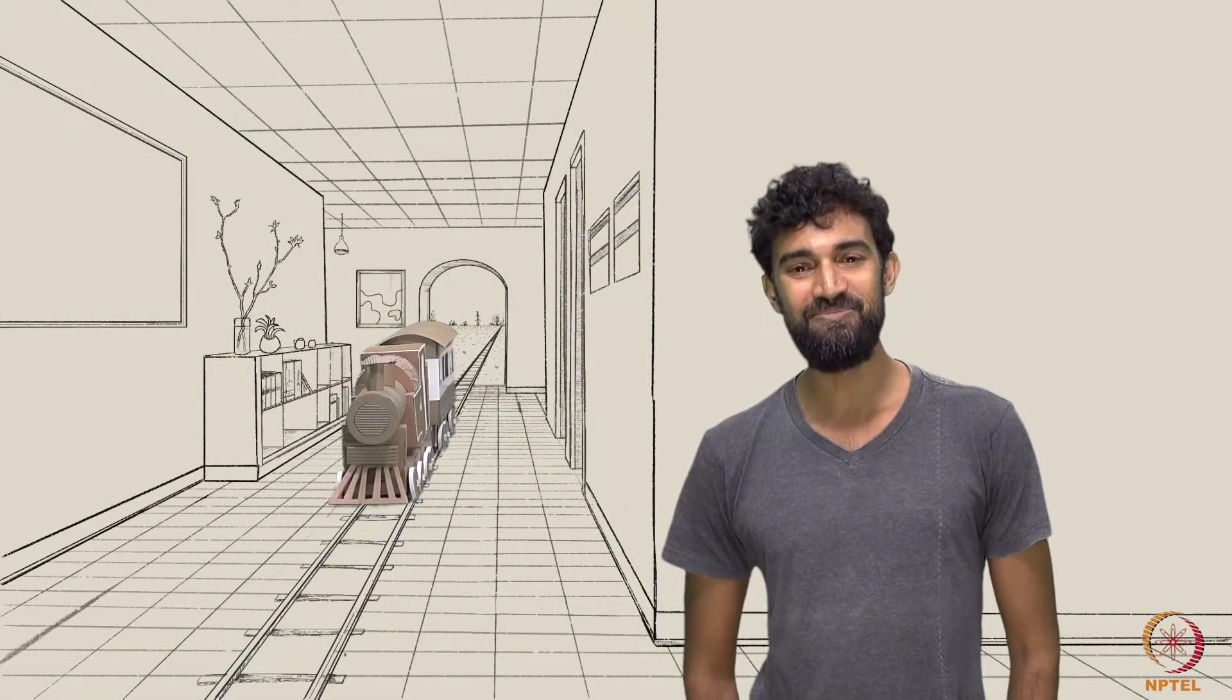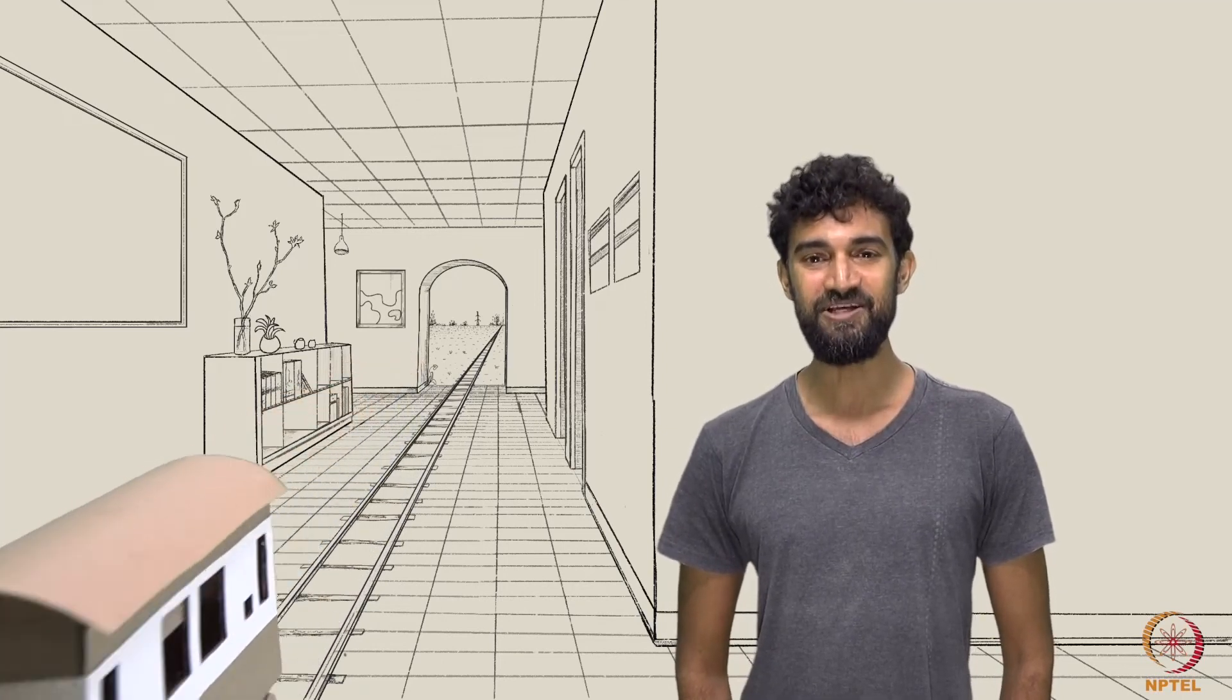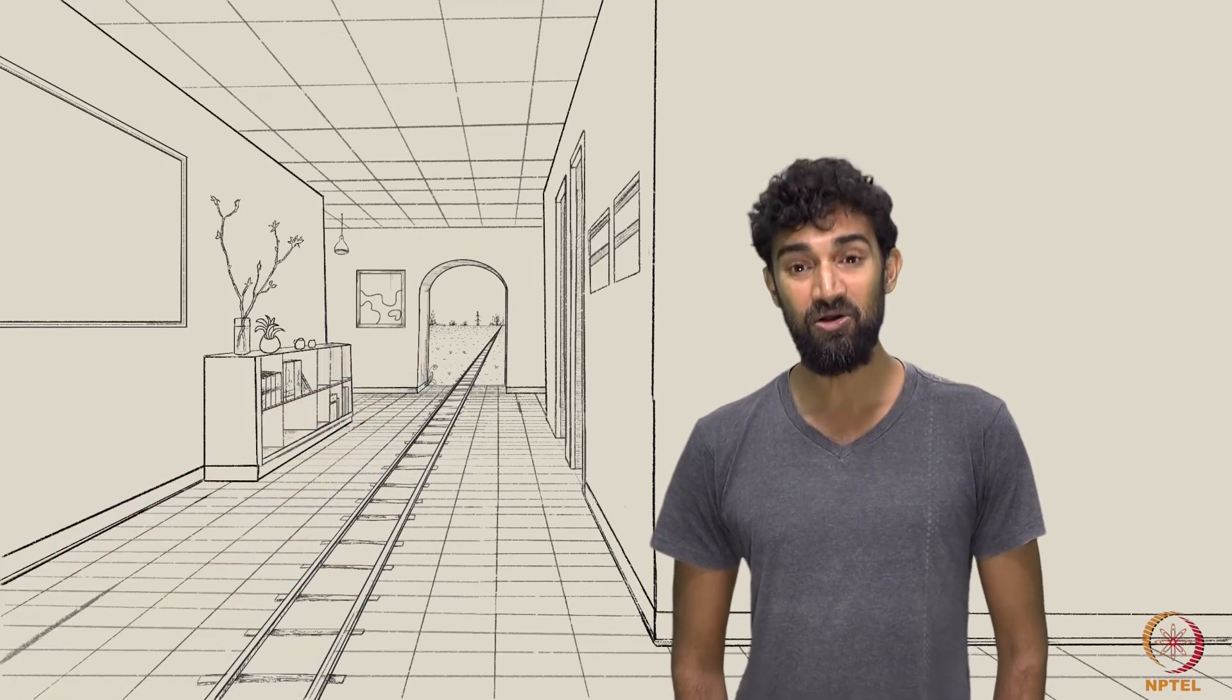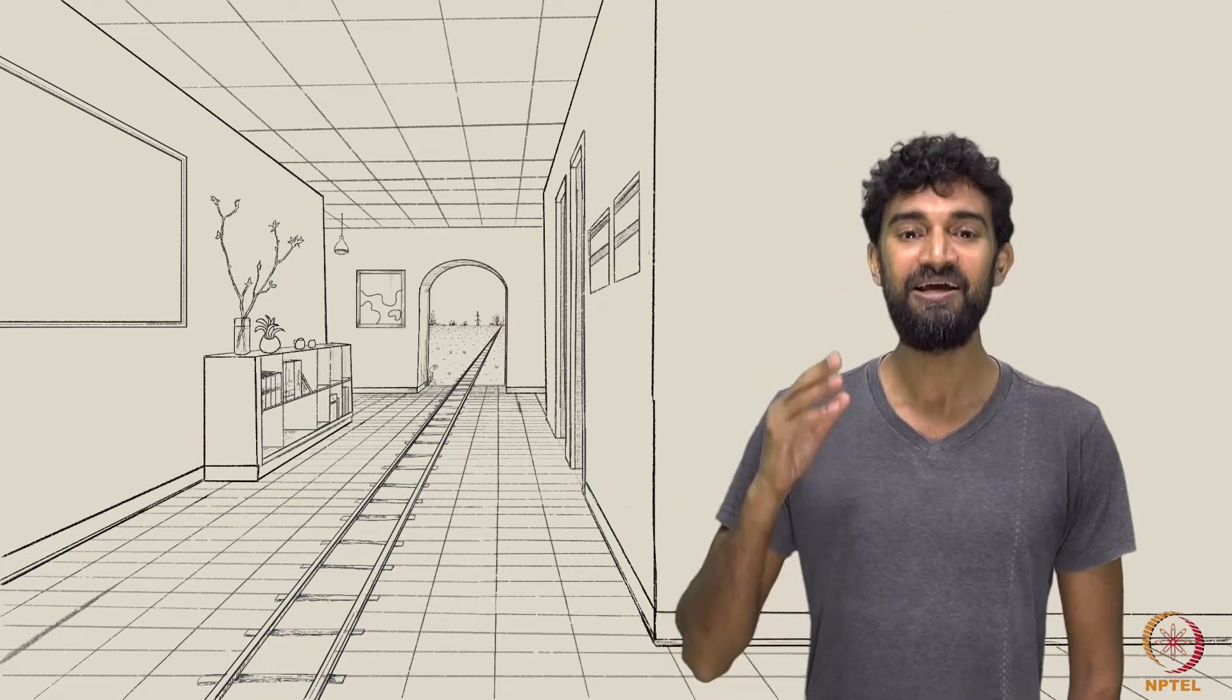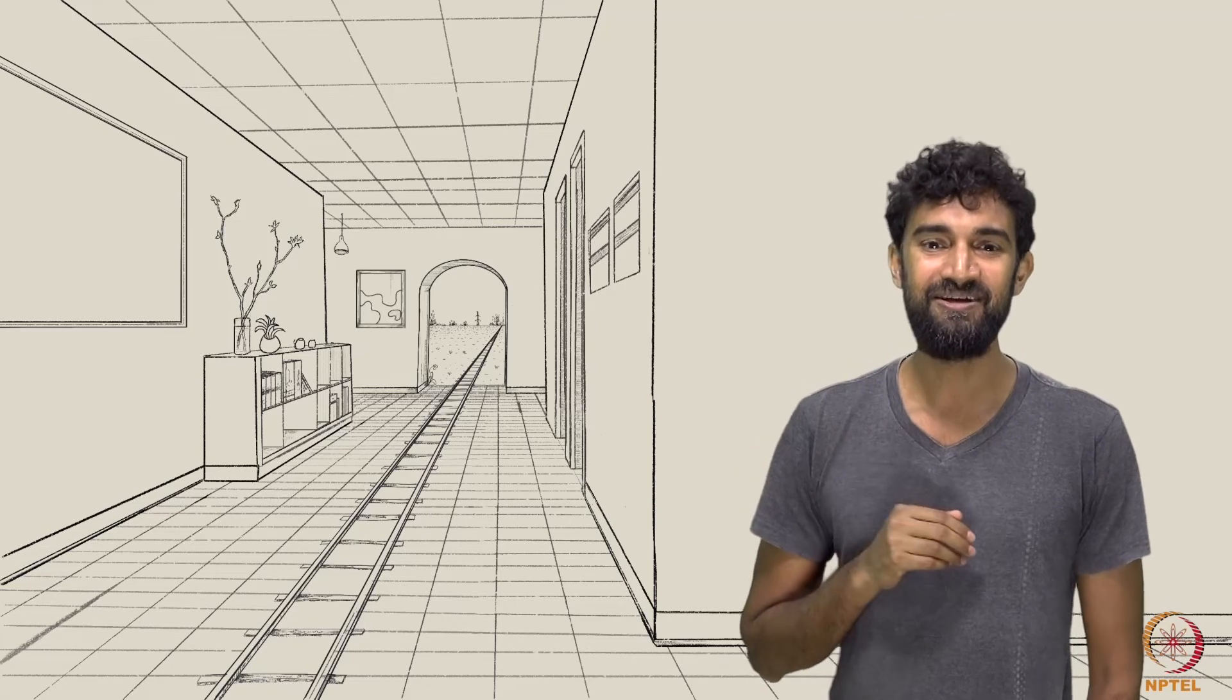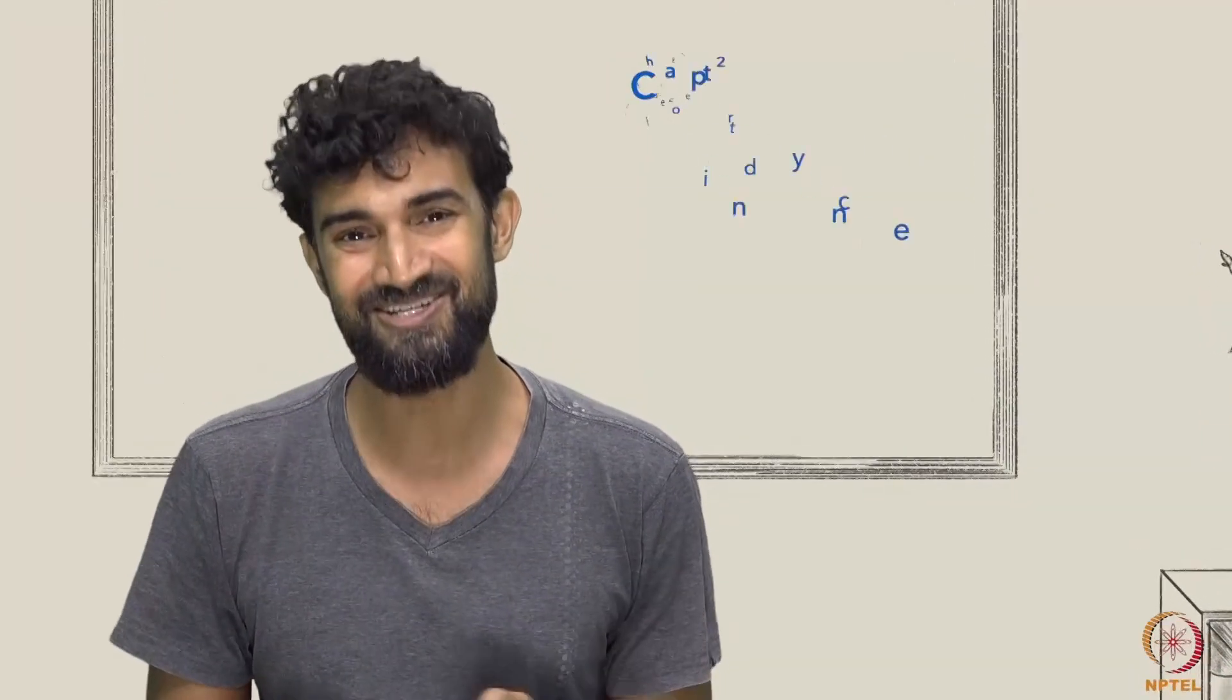Not only do the theorems of Desargues and Pappus continue to hold under shifts in perspective, they also work perfectly well when you allow points to lie at infinity. In fact, they actually require the existence of points at infinity in order to fully make sense. In this way, they're truly theorems of projective geometry. Our main objective this week is to carefully understand the basics of projective geometry.